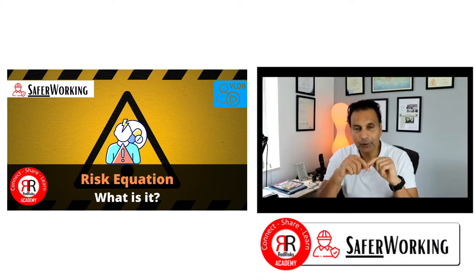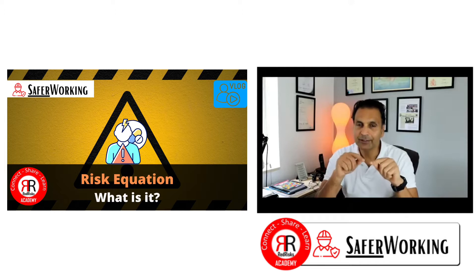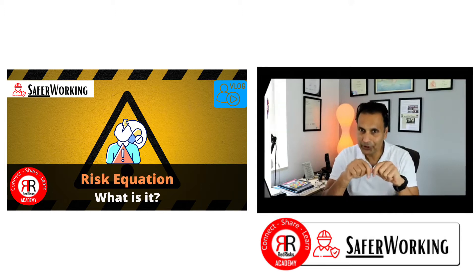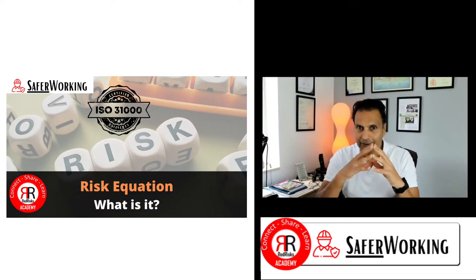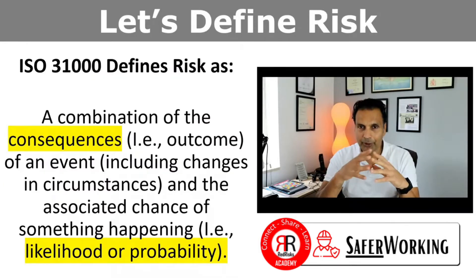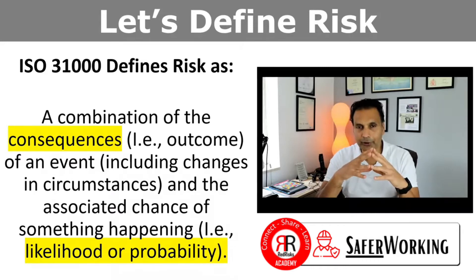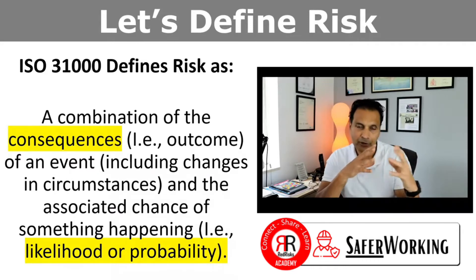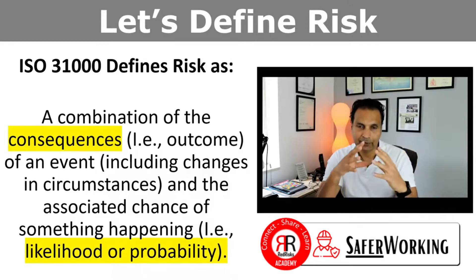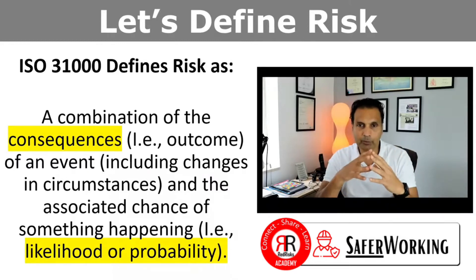This one is all about what is risk and what is the risk equation. ISO 31000 gives you a good definition for risk, and it's basically a combination of consequences and likelihood — in other words, probability.